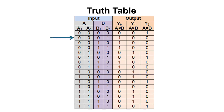In the next case, a1a0 is 00 and b1b0 is 01. Here 01 is 1 and 00 is 0, so B is greater than A, and y0 will be 1 while y1 and y2 will be 0. In general, whenever A is less than B, y0 is high; when A is greater than B, y1 is high; and when A equals B, y2 is high.